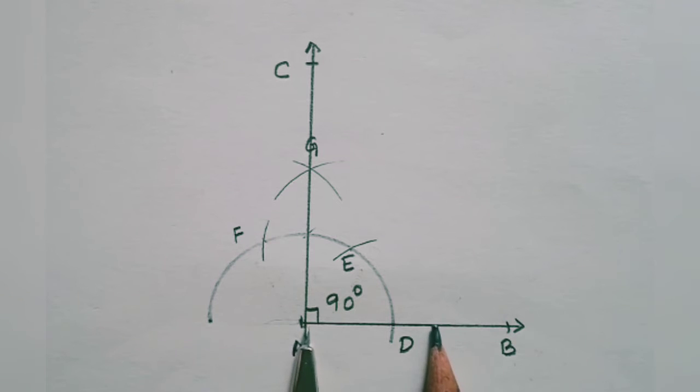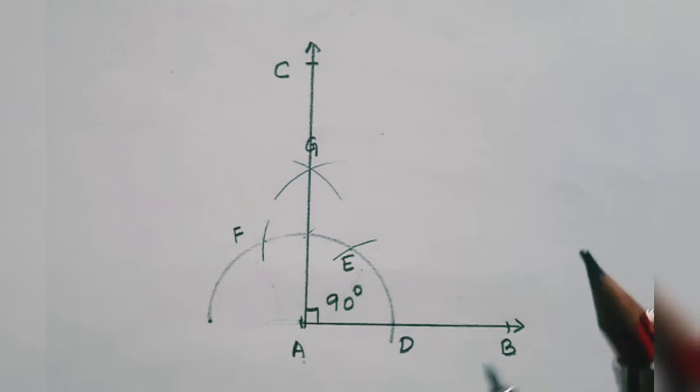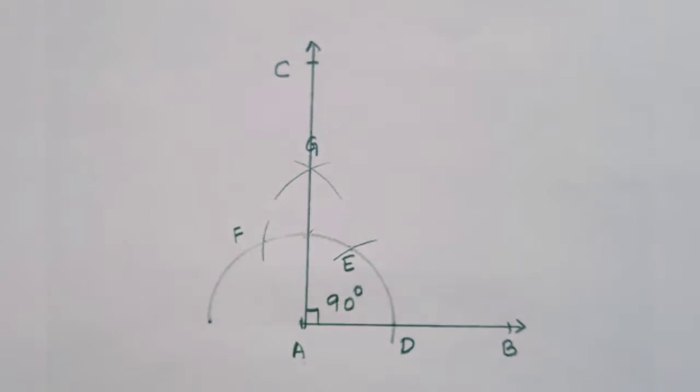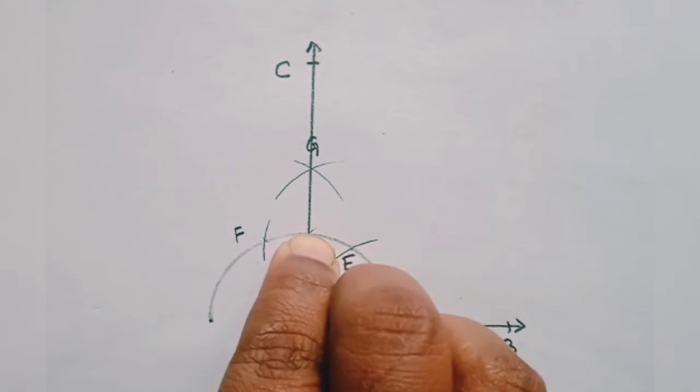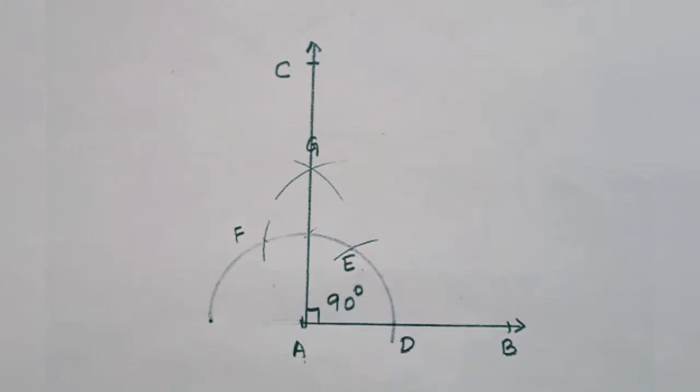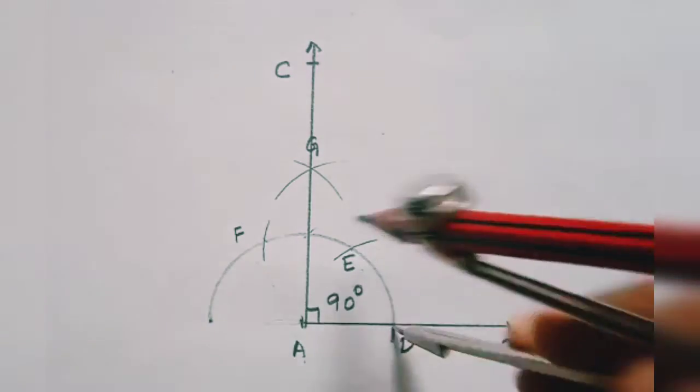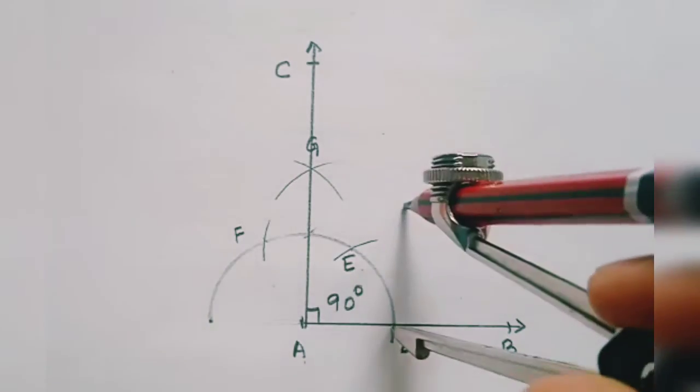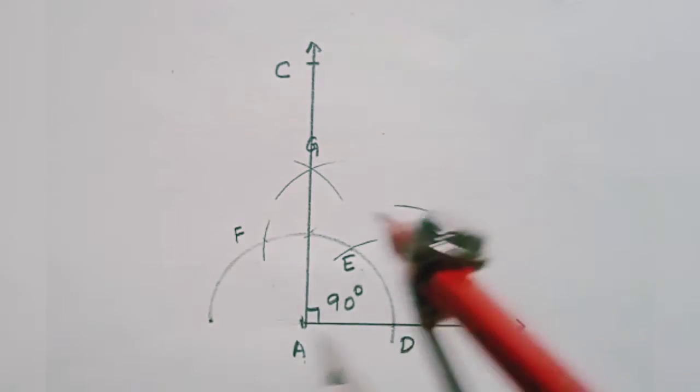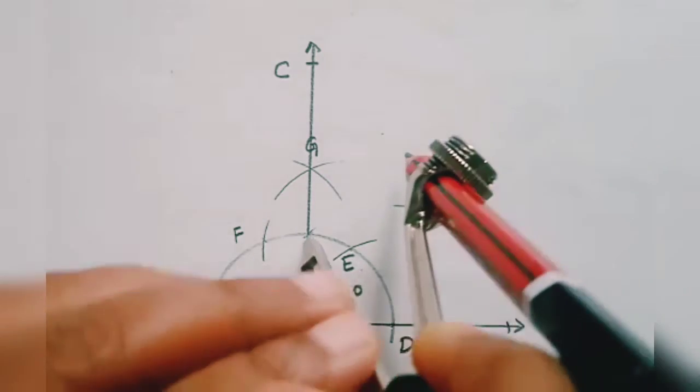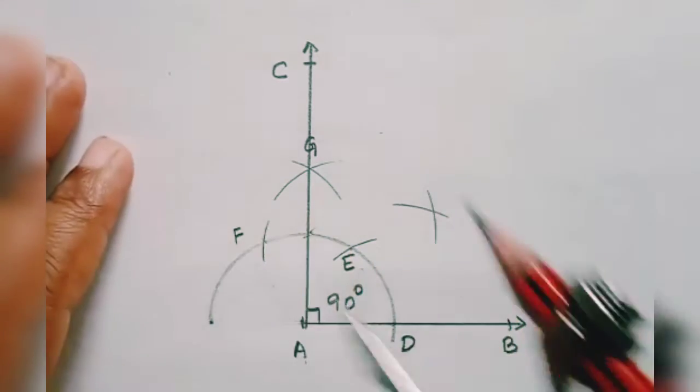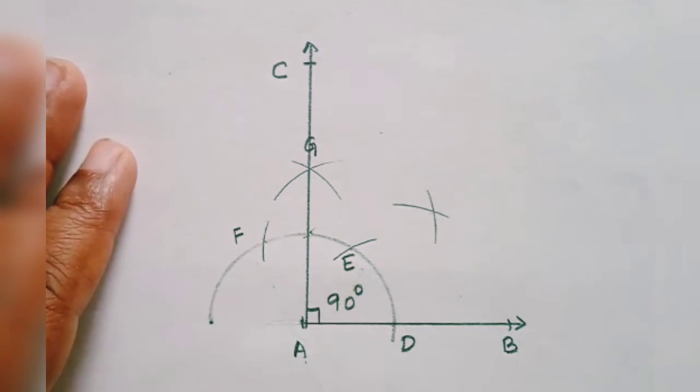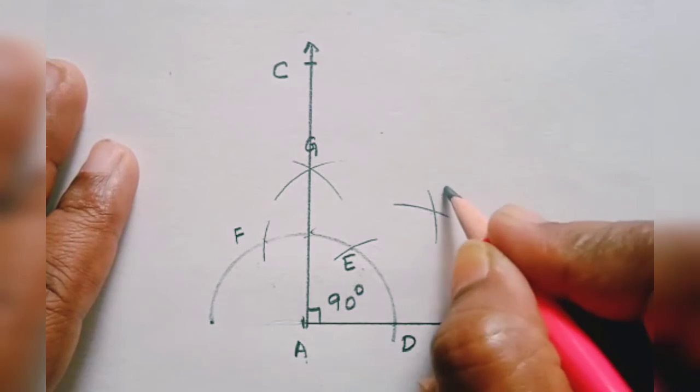So now initially we had taken any radii arc we had taken and we constructed. And now what you have to do is measure the distance from D to this 90 degree. That is from here to here you are going to measure and draw an arc here, and draw another arc here in such a way that both the arcs meet at a point. You can name this point as P.